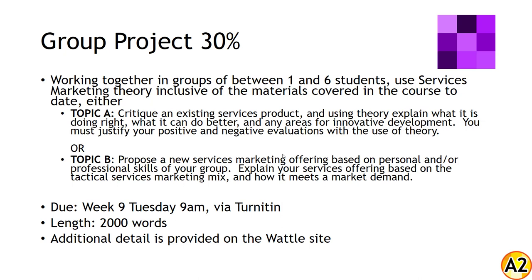The things to understand about the group project: priority one, the group consists of between one and six people. You are responsible for your own team selection, your own group selection. If you don't find anybody, you're soloing. If you don't want to work with anybody, you're also soloing. If you want to team up, we have a range of channels and opportunities for people to meet each other, up to and including the lecture.